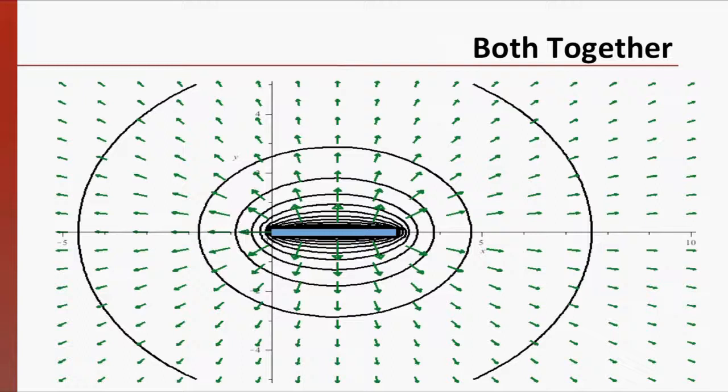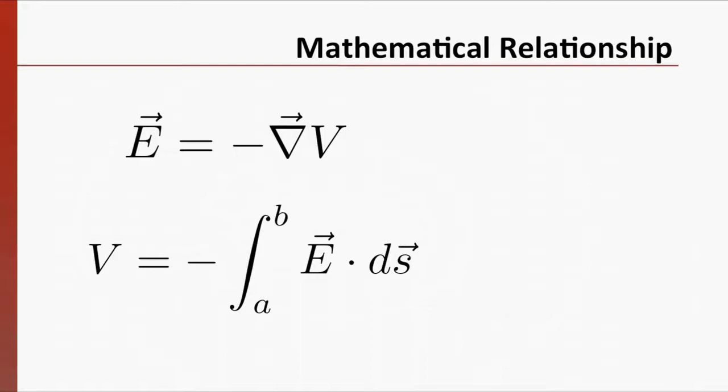The field and the potential are related mathematically through the gradient operator. As a vector operator, the gradient turns the scalar potential into a vector field. To go in the other direction, a line integral of the electric field turns that vector field into a scalar electric potential.